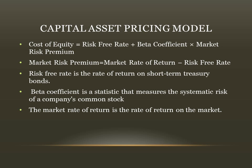Now, Capital Asset Pricing Model. Here, the required rate of return on equity capital is estimated by adding a risk premium to the risk-free rate of return. Cost of equity equals risk-free rate plus beta coefficient multiplied by market risk premium. Market risk premium equals market rate of return minus risk-free rate. The risk-free rate is the rate of return on short-term government securities. Beta coefficient is a statistic that measures the systematic risk of a company's common stock. The market rate of return is the rate of return on the market, like any broad index.